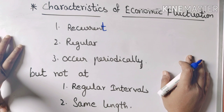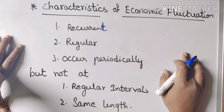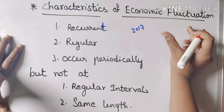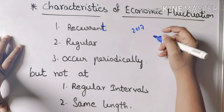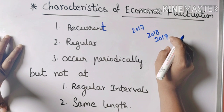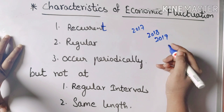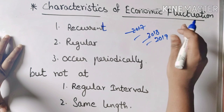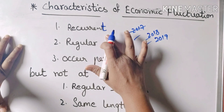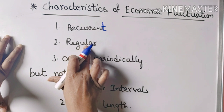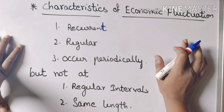First characteristic: Recurrent. Economic fluctuations occur again and again. Suppose in 2017, the economy fluctuates; then again in 2018 or 2019 — they recur. So economic fluctuations with ups and downs are recurrent, meaning they happen again and again.